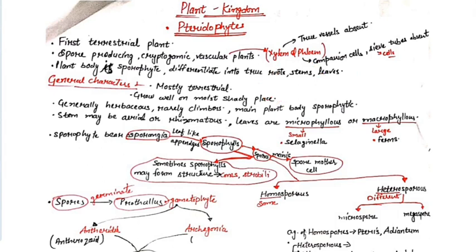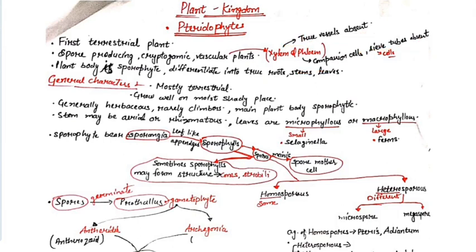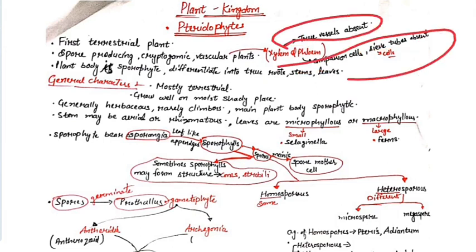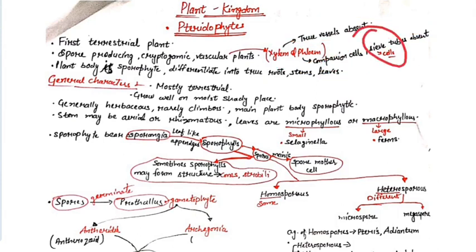Xylem functions in transport of water and nutrients. Phloem transports food prepared by the plant. Xylem has 4 types of tissues and true vessels are absent in pteridophytes. In phloem, companion cells and sieve tubes are absent, but sieve cells are present.